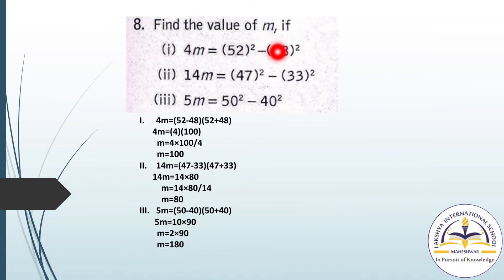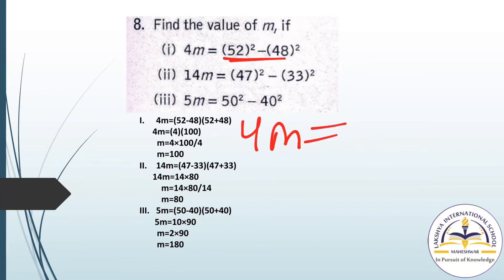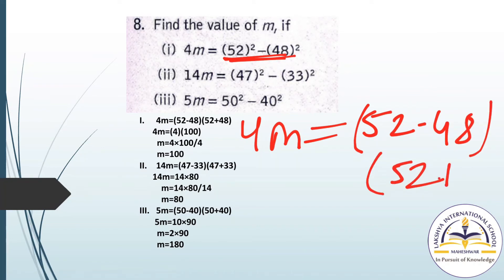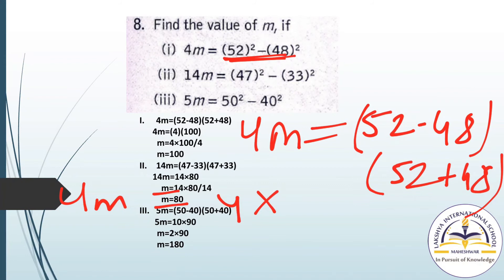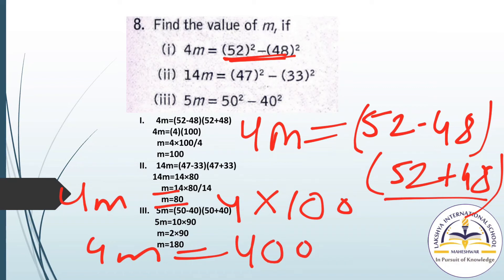Question number 8: find the value of M if 4M equals 52 square minus 48 square. Solving the RHS using Identity 3: 52 square minus 48 square equals (52 - 48)(52 + 48) equals 4 into 100 equals 400. So 4M equals 400, giving M equals 400 divided by 4, which is 100.